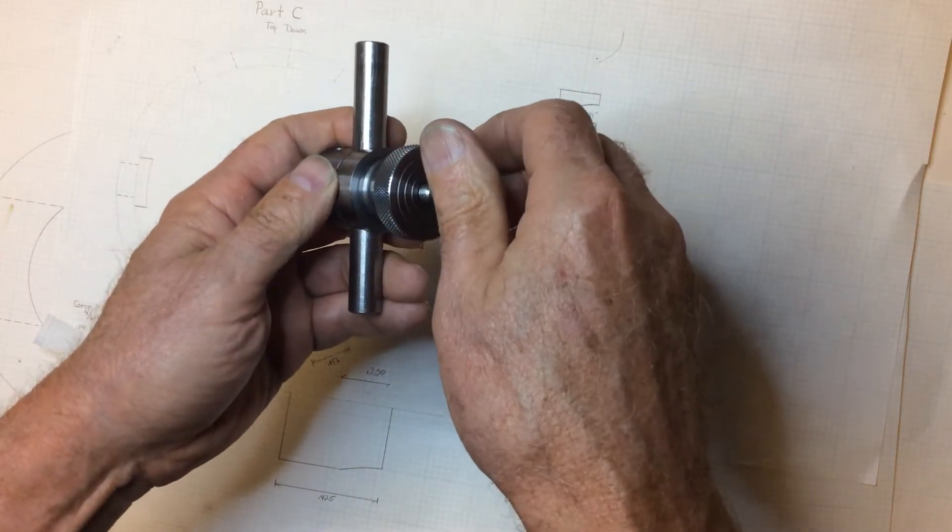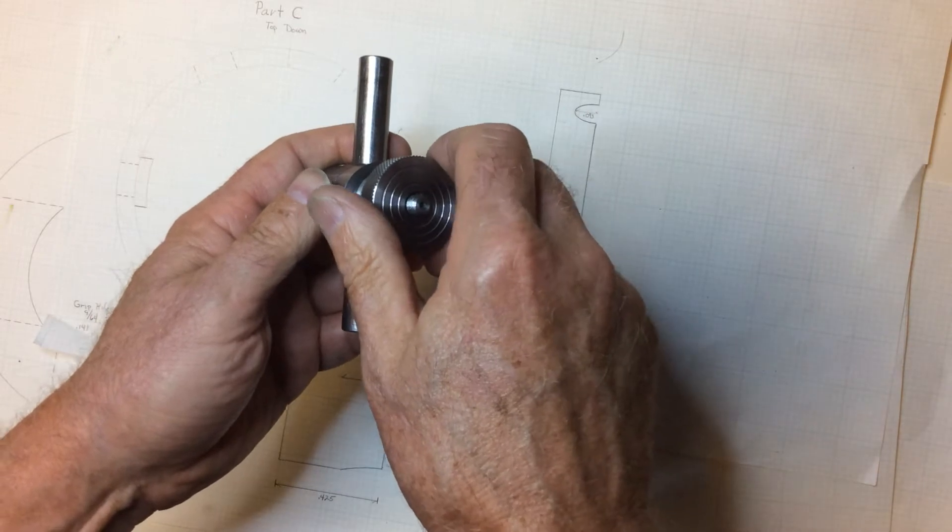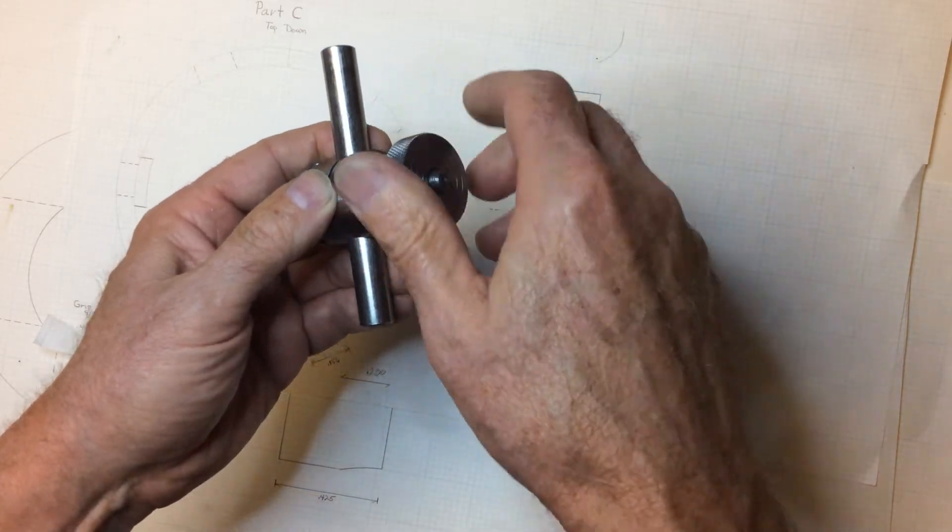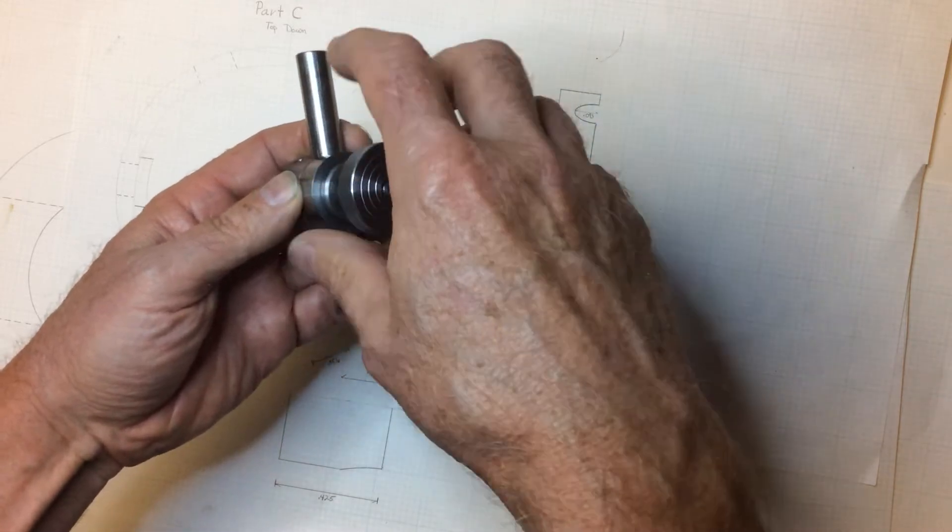Then, let's take this snug apart so that you can see how it works on the inside. First off, slip off that knurled nut.